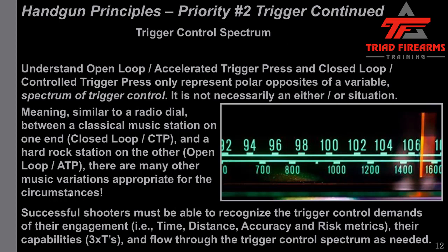The concept of a trigger control spectrum: open loop accelerated trigger press and closed loop controlled trigger press only represent polar opposites of a variable spectrum of trigger control. It is not necessarily an either-or situation. Similar to a radio dial — classical music on one end representing closed loop controlled trigger press, and hard rock on the other representing open loop accelerated trigger press — there are many other variations appropriate for the circumstances. Successful shooters must recognize the trigger control demands of their engagement based on time, distance, accuracy, and risk, juxtaposed with their capabilities, and flow through the spectrum as needed.